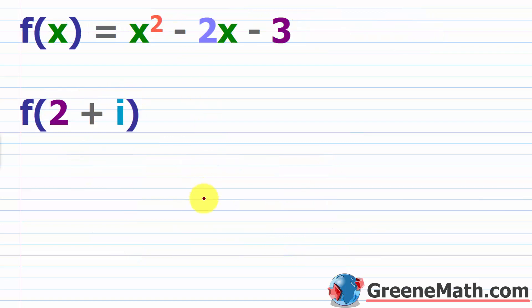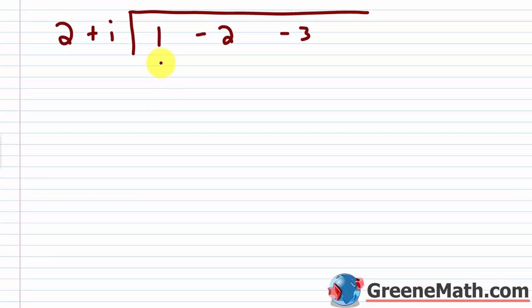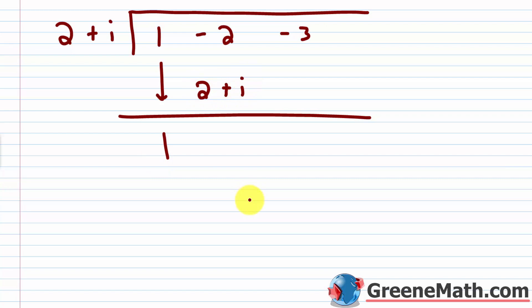You might also get examples with complex numbers — these are more tedious, but no more difficult; you just need to understand how to work with complex numbers. Suppose f of x equals x squared minus 2x minus 3, and we want to find f of 2 plus i. You set this up the same way: put 2 plus i over here, and grab your coefficients: 1, negative 2, and negative 3. Drop the 1 down. Then 2 plus i times 1 gives 2 plus i. Adding negative 2 plus (2 plus i): negative 2 plus 2 is 0, so we're left with just i.